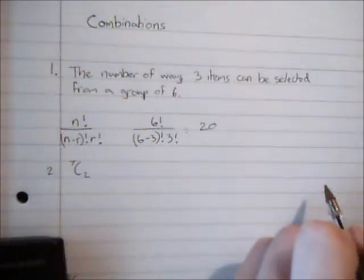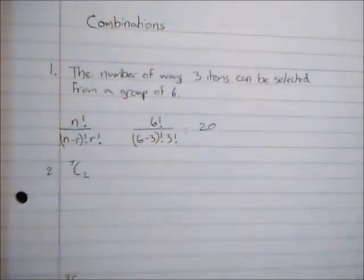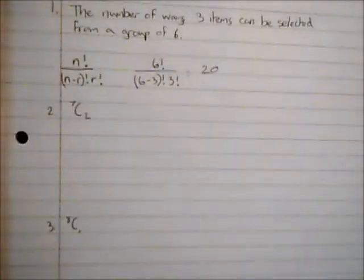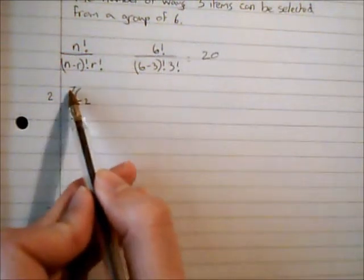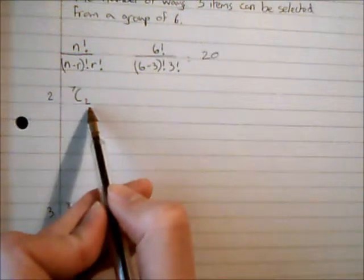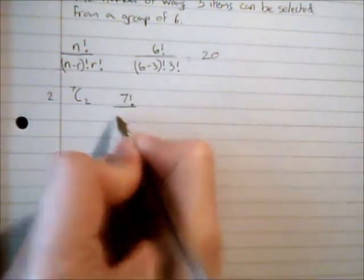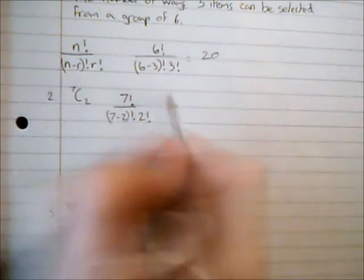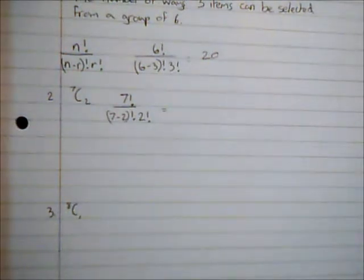So there are 20 different ways I can select three items from a group of six. There are other ways of writing this rather than doing it in a sentence. One of them is to write it using this format, C for combinations. So from a group of seven I want to know how many combinations of two are there. I can use the formula again so I've got here seven factorial over seven subtract two factorial two factorial.